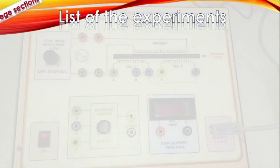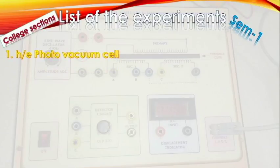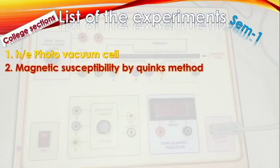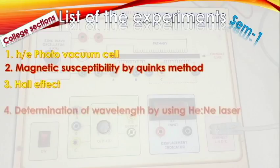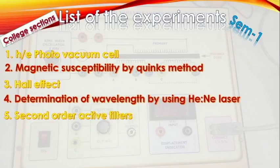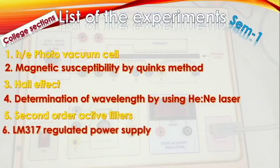Friends, this is the list of experiments based on the college section and the number of experiments are 12. The first one is h/e photo vacuum cell, second one is magnetic susceptibility by Quincke's method, third one is Hall effect, fourth one is determination of wavelength by using He-Ne laser, and fifth one is second order active filters.